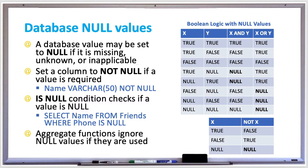In the first two columns, we have the value for x and y, which could be either true or false. Then using AND, if both x and y are true, then x AND y is true.